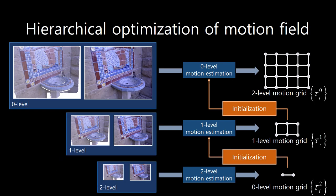We optimize the camera motion grid in multi-level from coarse level to fine level. For each level, we optimize the camera motion grid and use it to initialize the next level motion grid.